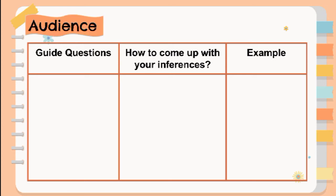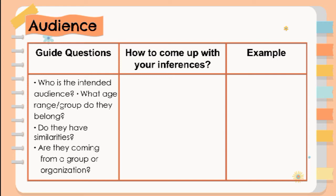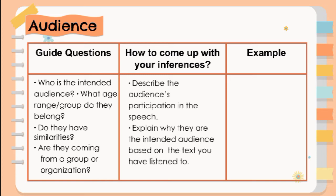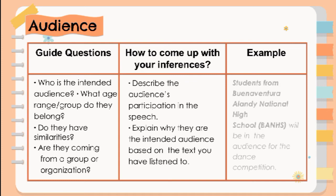Next is the Audience. Guide questions: Who is the intended audience? What age range or group do they belong to? Do they have similarities? Are they coming from a group or organization? Steps: Describe the audience participation in the speech and explain why they are the intended audience based on the text you have listened to. Example: Students from Buenaventura Alandi National High School (BANHS) will be the audience for the dance competition.